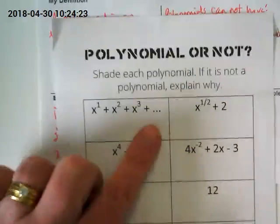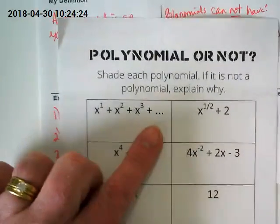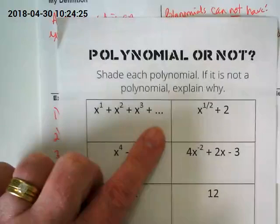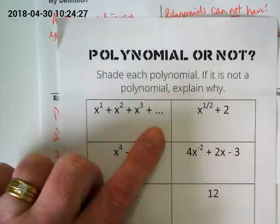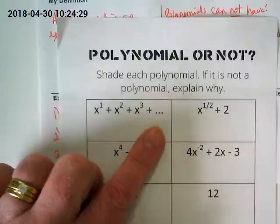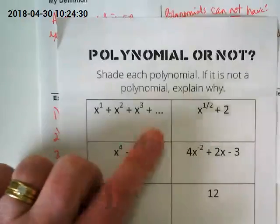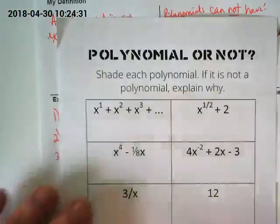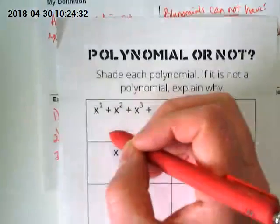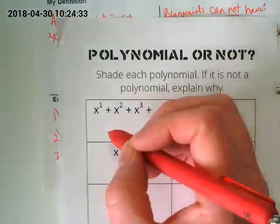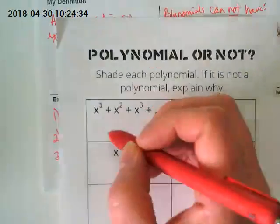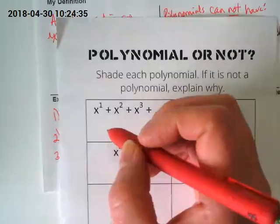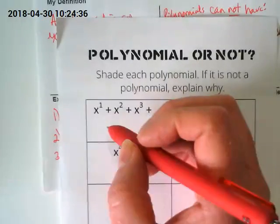This looks like it goes on and on and on. So what would we call that? Non-a-polynomial. Because it goes on and on and it's infinite. So this is not a polynomial because it's infinite.